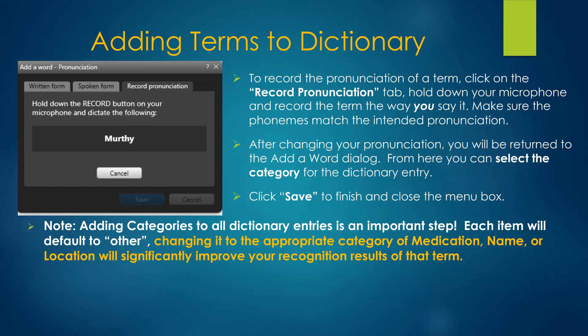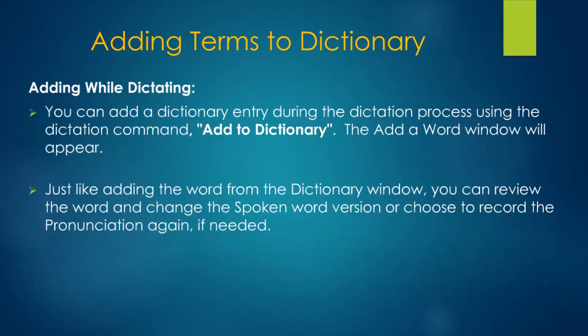The final step after recording your pronunciation is to select the category, such as medication, location, or name, for that term. Terms may be added to the dictionary while dictating or when making corrections by using the appropriate command. Note that the dictionary is essentially personal, linked to your profile only.